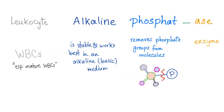I love etymology and terminology. Leukocyte alkaline phosphatase — let's break that down. Phosphatase is an enzyme that removes phosphate groups from molecules, causing dephosphorylation. Alkaline because it's stable and works best in an alkaline medium. Leukocyte alkaline phosphatase because we are talking about an enzyme in the mature white blood cells.